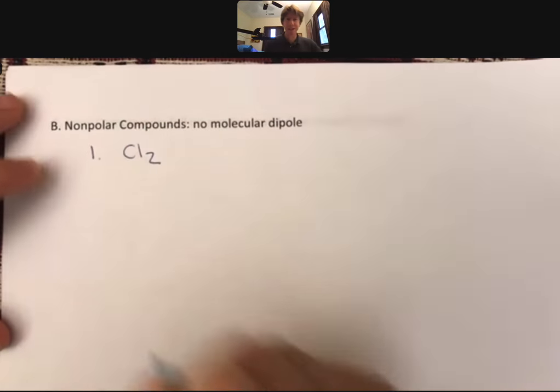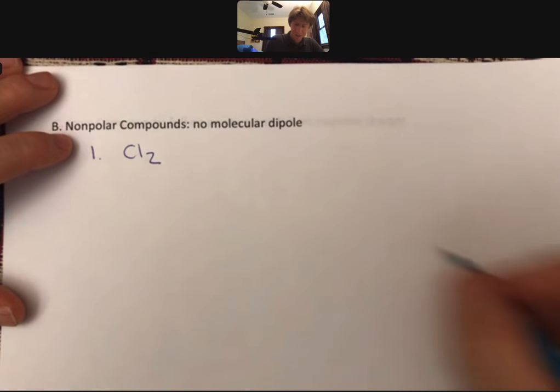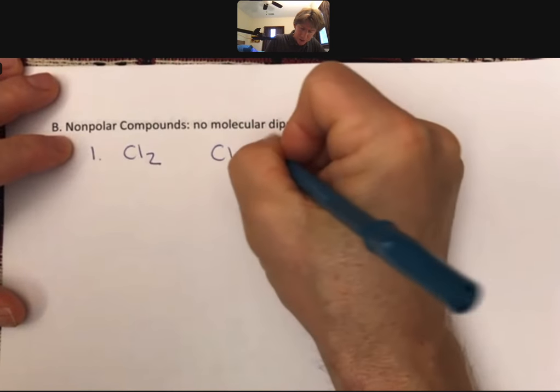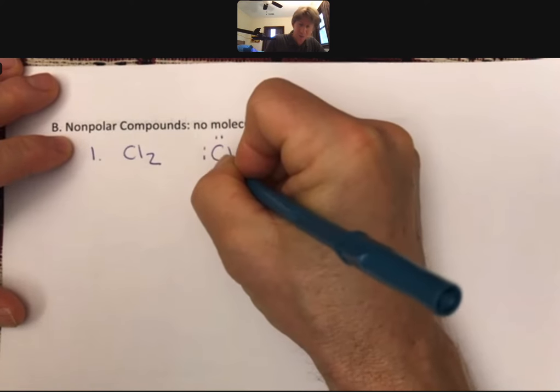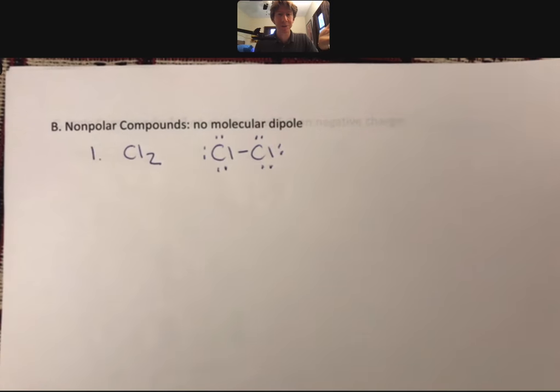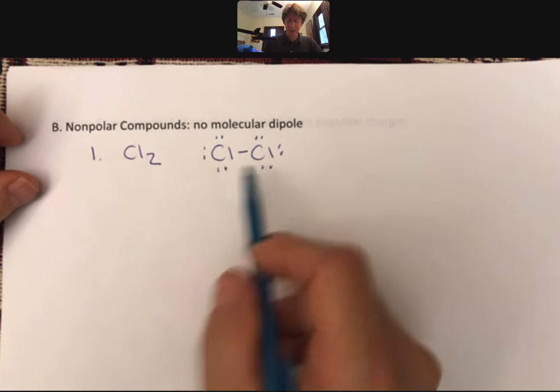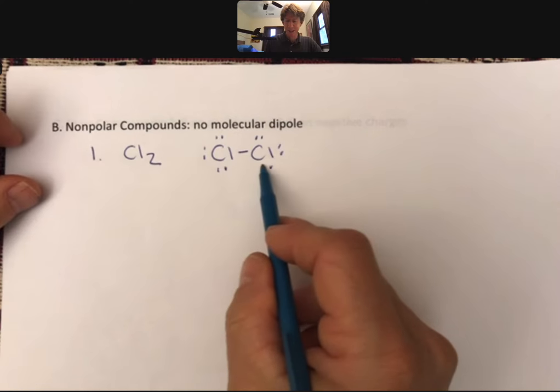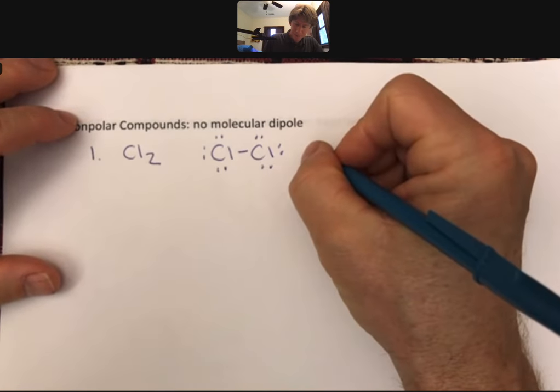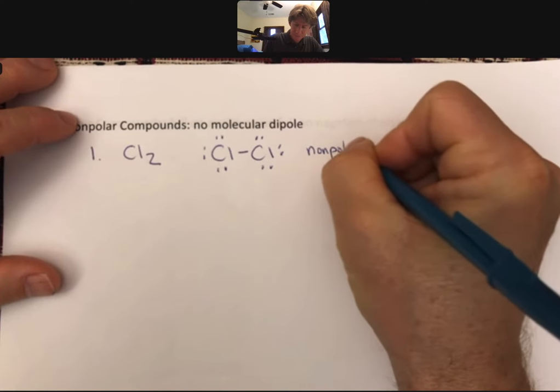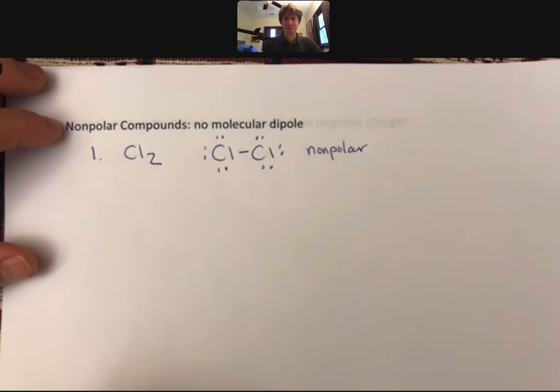So something like Cl2, which if we draw its Lewis structure, and if you doubt or if you have any questions about whether something is polar or nonpolar, always draw its Lewis structure, always do its shape. That is foolproof. But in this case, we have two chlorine atoms bonded together. They have the same electronegativity, nonpolar. So that one was not too bad.